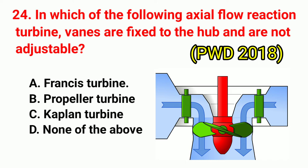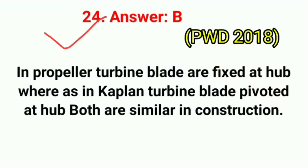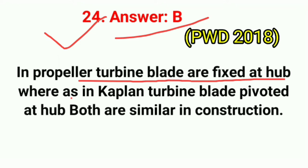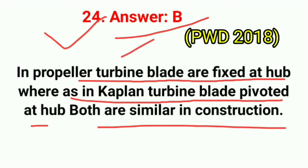Question No. 24. In which of the following axial flow reaction turbines are vanes fixed to the hub and not adjustable? Correct answer is option B: propeller turbine. In a propeller turbine, blades are fixed at the hub, whereas in a Kaplan turbine, blades are pivoted at the hub. Both are similar in construction.